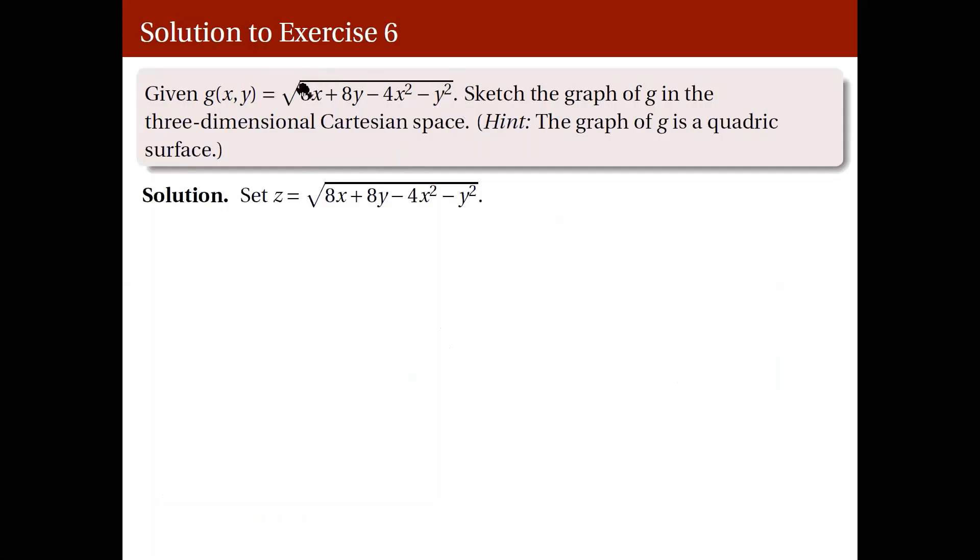The way to do this will be to set z equal to this expression for g(x,y). And then, since we're not really comfortable with working with square roots, so let's remove them. If we do so by squaring both sides, we get this. And then we move all terms on the right to the left. Of course, their signs are negated.